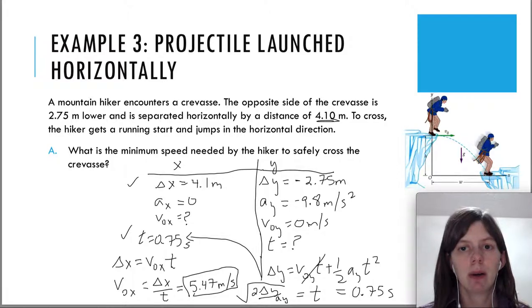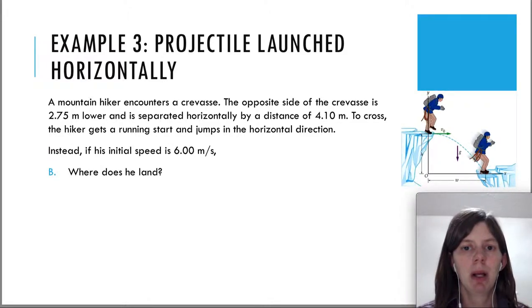Let's look at part b here. Same problem. But now it says that instead of the initial speed that we just found, that the initial speed is 6 meters per second. If that's the case, where does he land? So conceptually, if we think about this, if the hiker jumped at the 5.47 that we found in the previous slide, then he or she will only make it right at the edge. If he jumps a little faster, then we know that he's going to make it a little bit further.